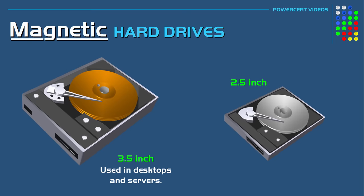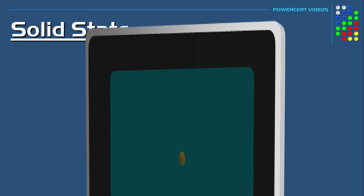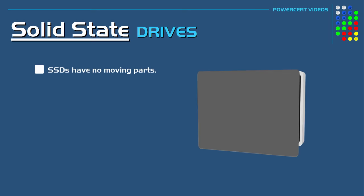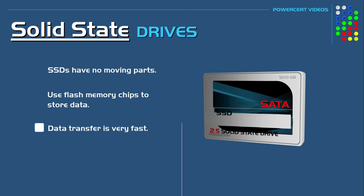Another type of storage device is called an SSD, or solid state drive. These drives have no moving parts — instead of using magnetic disks, they use flash memory chips to store data, so data transfer is very fast. Since they have no moving parts, they are also very quiet and more energy efficient.